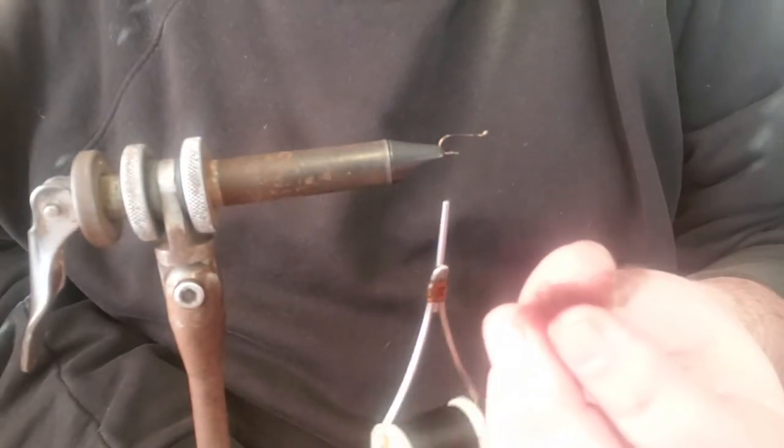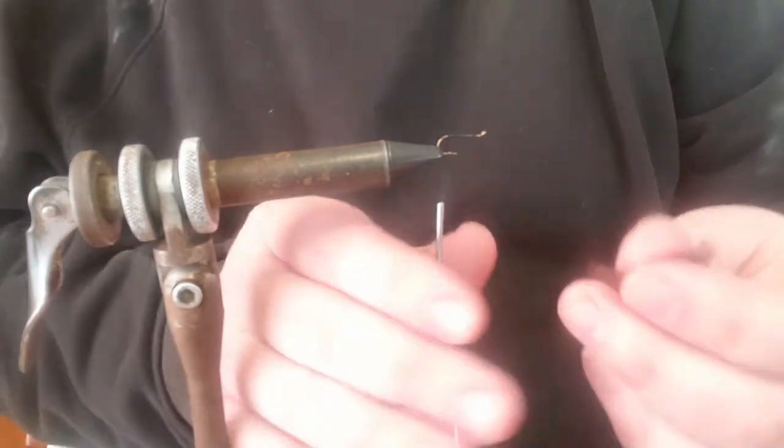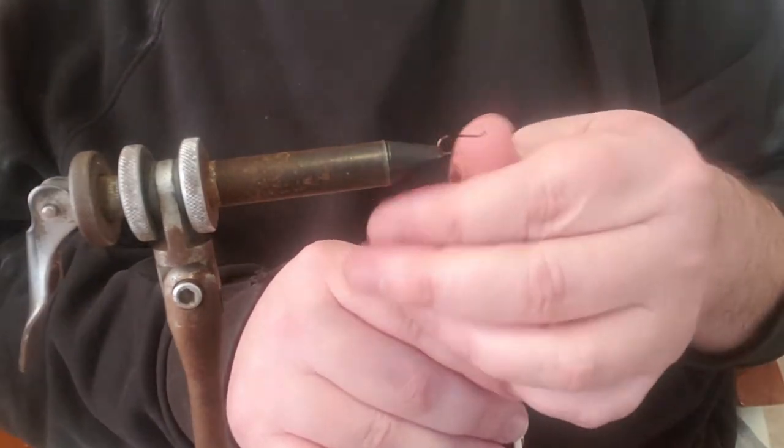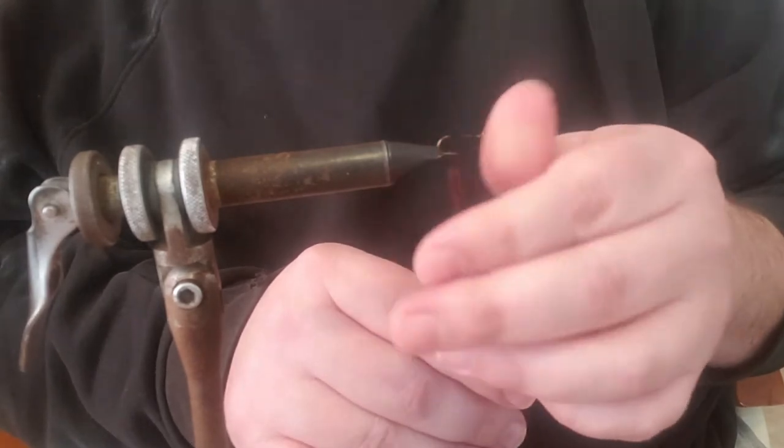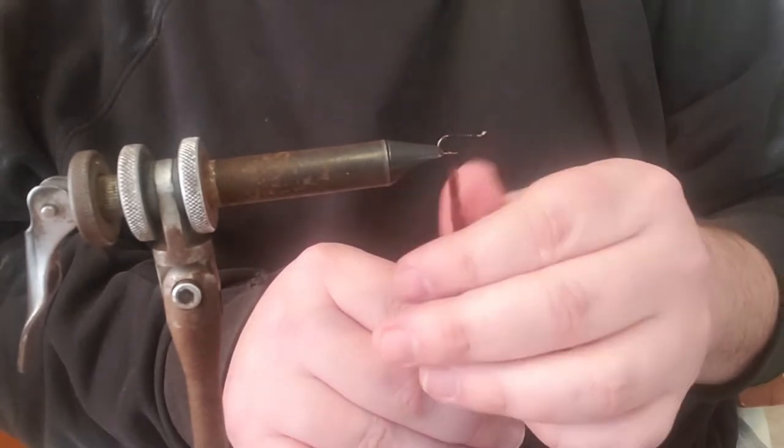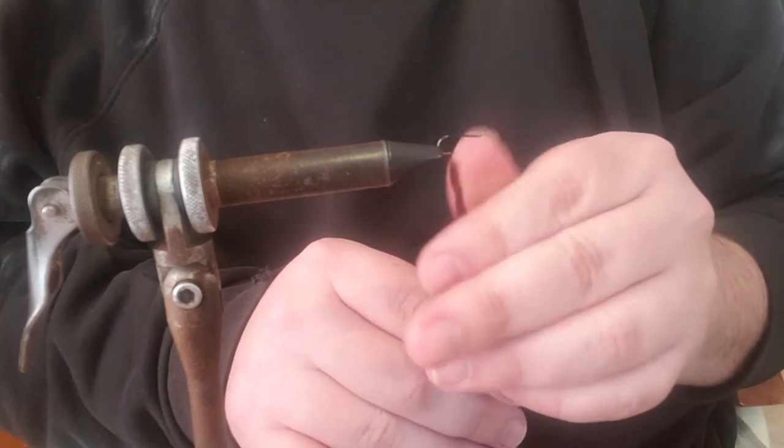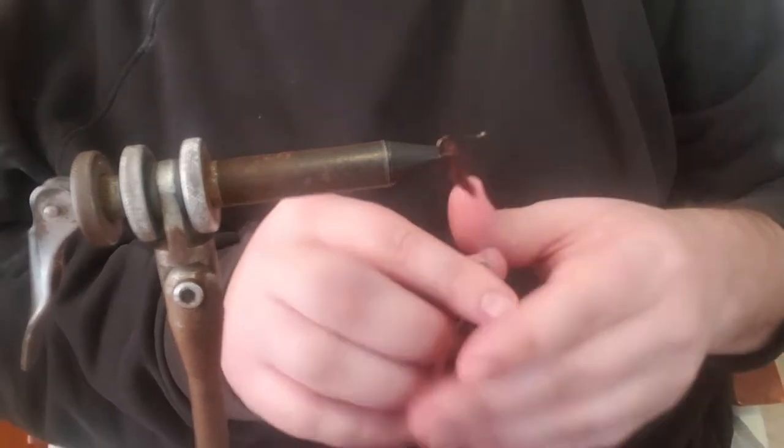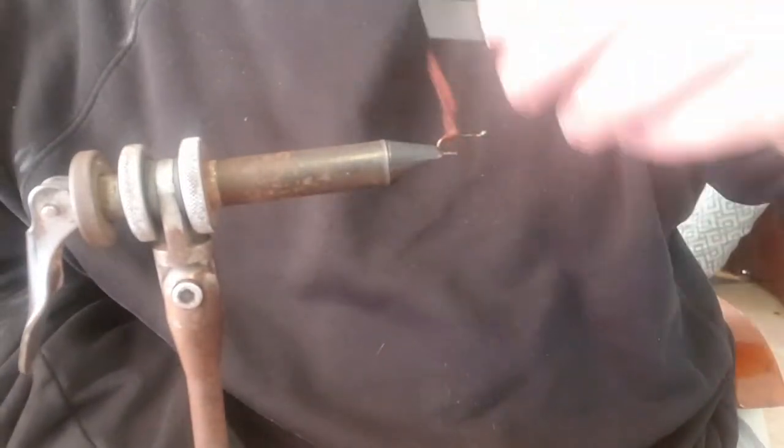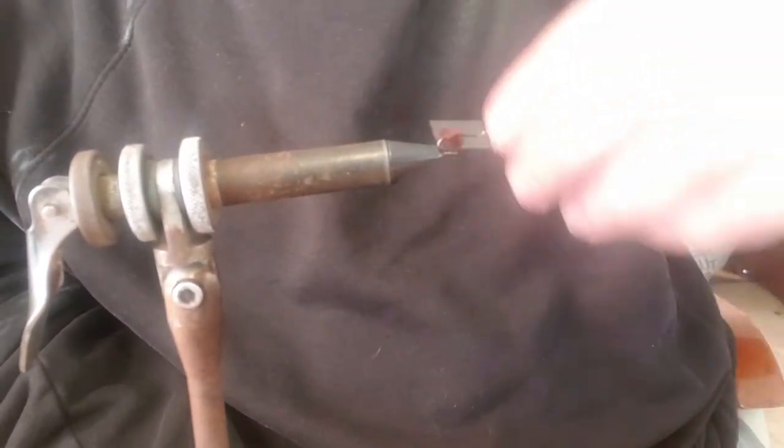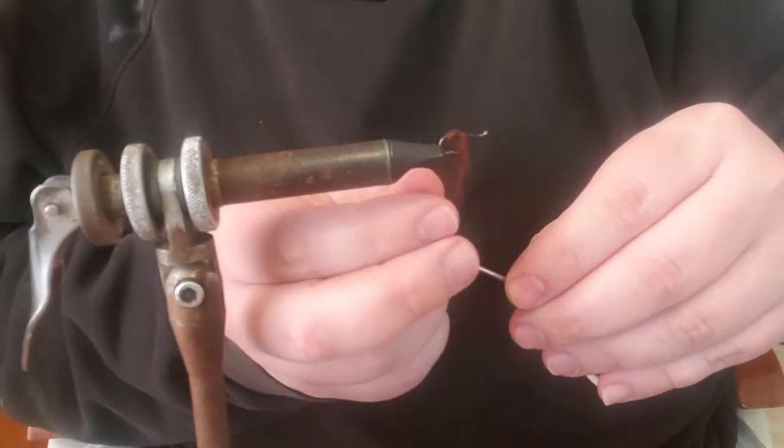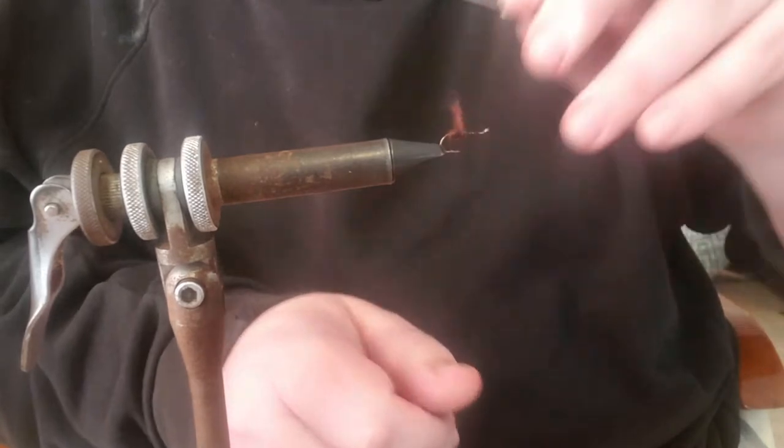Now we're going to get some brown dubbing, it's brown with a little bit of black in it. Just work it onto the thread here. Go ahead and give it some spins around. Looks like about enough. I'm going to pull off the excess.